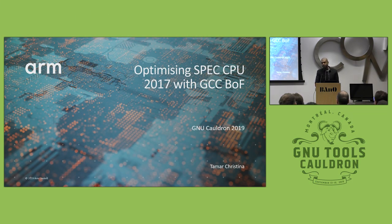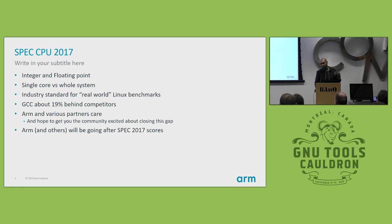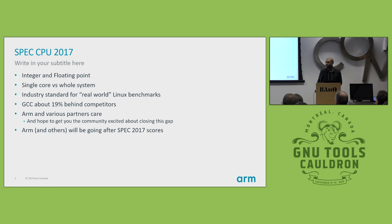Welcome to this talk about optimizing SPEC 2017. I have a few slides to show why we're going after SPEC and also a couple of things we're looking at, and hopefully open up discussion. SPEC 2017 is essentially the industry-standard benchmark for Linux benchmarking. It consists of two parts: an integer and a floating-point benchmark. You can run it with one copy to test single-core performance, or n times where n is your number of cores. GCC is about 17% behind overall compared to leading proprietary compilers, and ARM and our partners really care about closing this gap. We'll be aggressively going after SPEC for the next few GCC releases.